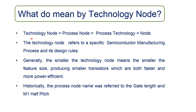In the history of semiconductor technology, the term technology node was very popular. This term was also referred to as a process node, process technology, or simply a node. The technology node refers to a specific semiconductor manufacturing process and its design rules. Different nodes mean different circuit generations and different architectures. Generally, the smaller the technology node, the smaller the feature size of a transistor, producing smaller transistors which are both faster and more power efficient.